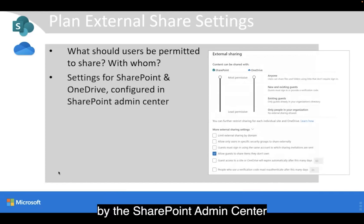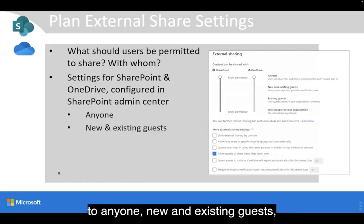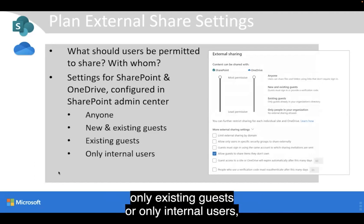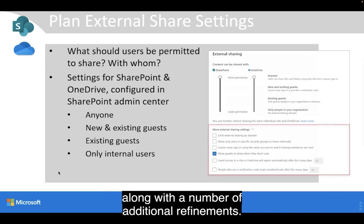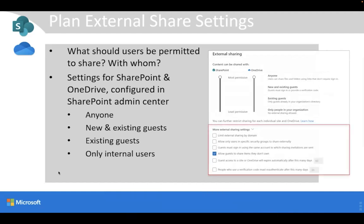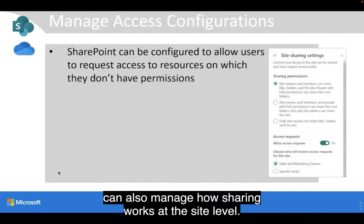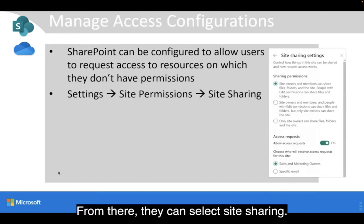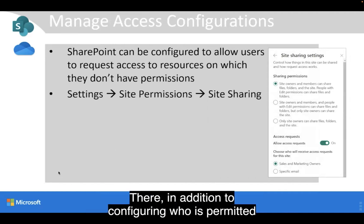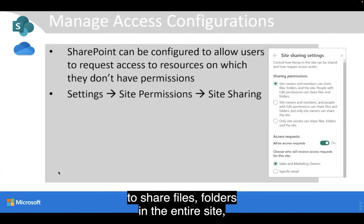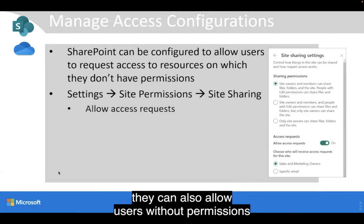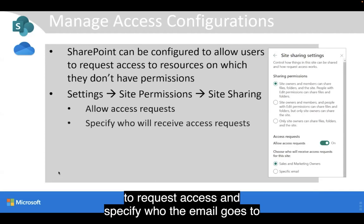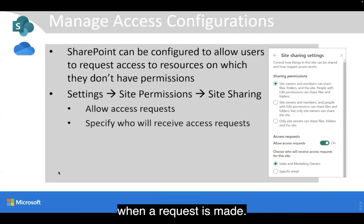Sharing settings are configured in the SharePoint Admin Center and allow you to permit sharing to anyone, new and existing guests, only existing guests, or only internal users, along with a number of additional refinements. SharePoint site admins can also manage how sharing works at the site level by going to the Settings menu and selecting Site Permissions, then Site Sharing. There, in addition to configuring who is permitted to share files, folders, and the entire site, they can also allow users without permissions to request access and specify who receives the email when a request is made.